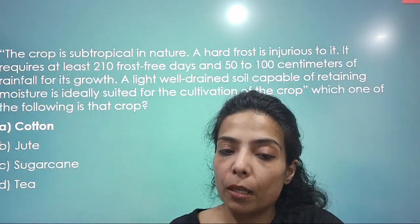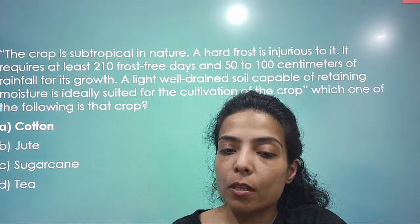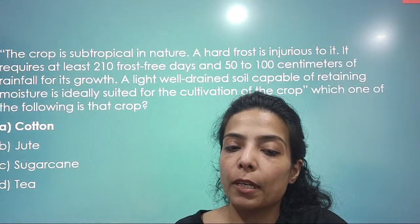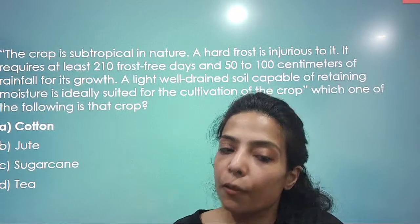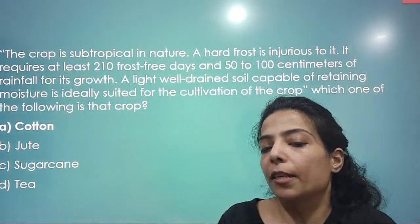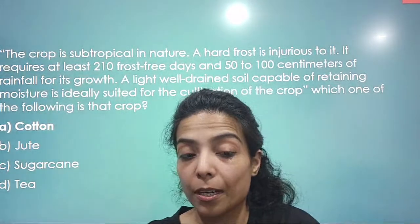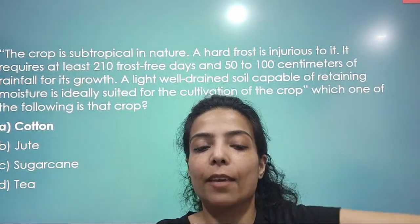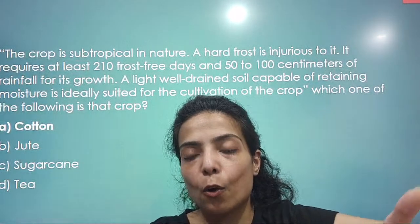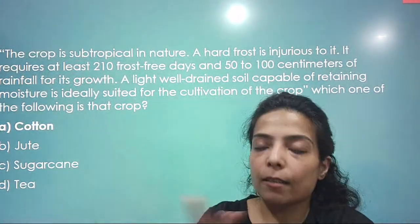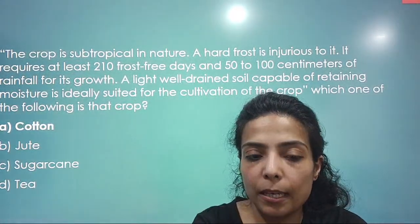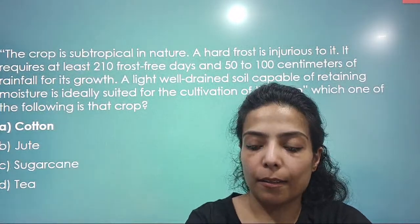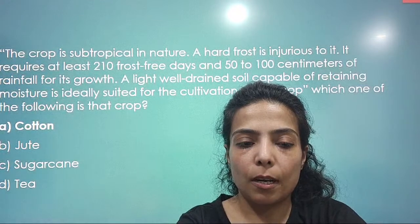The crop is subtropical in nature. A hard frost is injurious to it. It requires at least 210 frost-free days and 50 to 100 cm of rainfall for its growth. Light, well-drained soil capable of retaining moisture is ideally suited for its cultivation. Among the options given, only cotton fits all these parameters. The others have quite different conditions. So this was a straightforward answer — cotton.